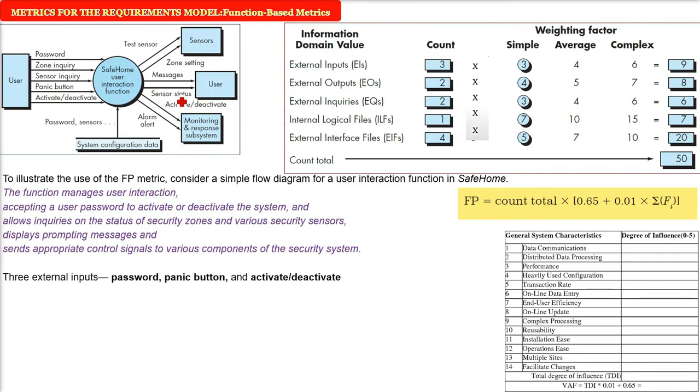But our idea is to compute the function point. So what are the external inputs? We need to find out EIs. What are EIs, external inputs? So what are the inputs? Password is an input, the panic button is an input, and the activate and deactivate is the external input. So how many are there? Three. So in front of external inputs, we are going to put under count three. Now we have two external inquiries. What are these? The zone inquiry, which area we are talking about and which sensor we are talking about, sensor inquiry. These are two external inquiries. So in place of EQ, we are going to give the number two.